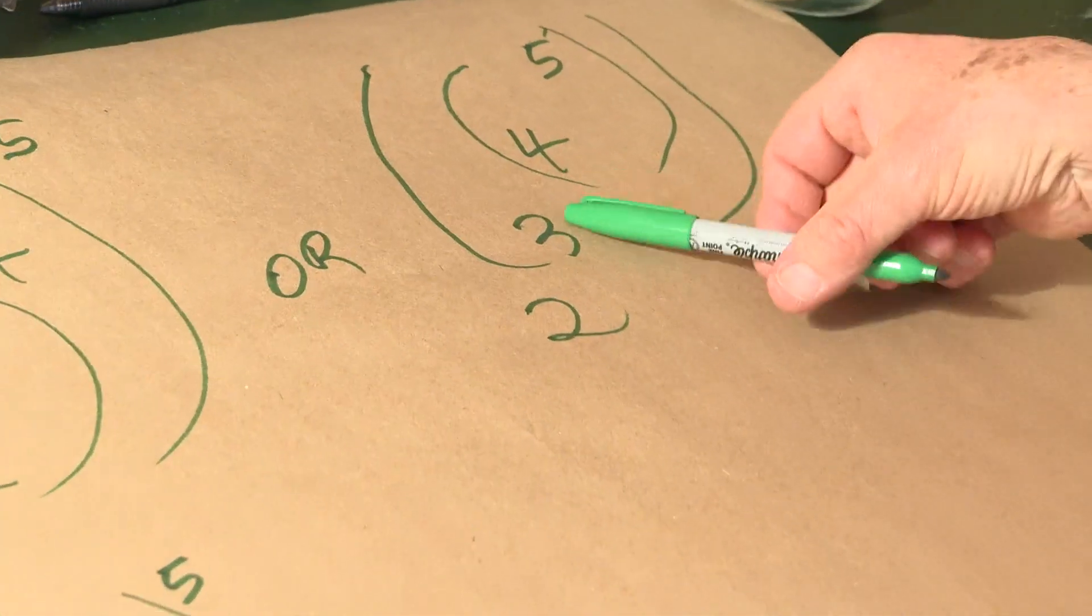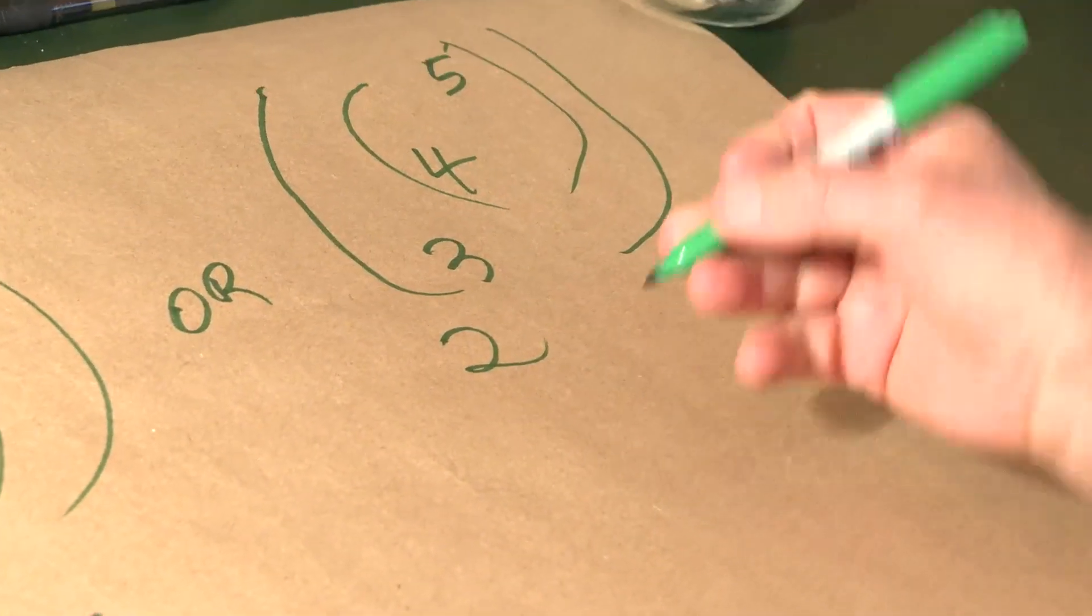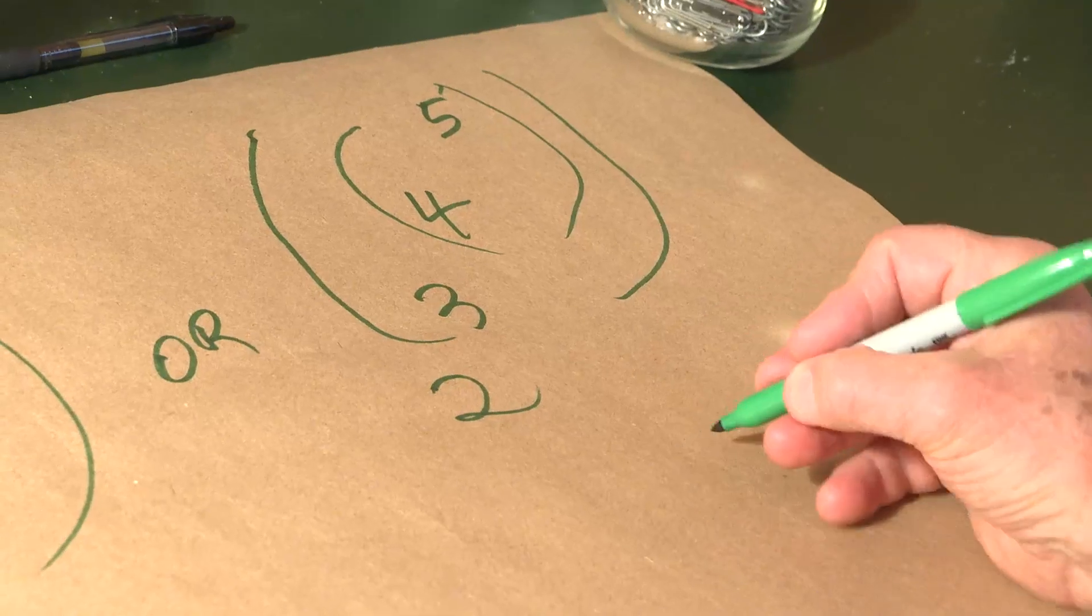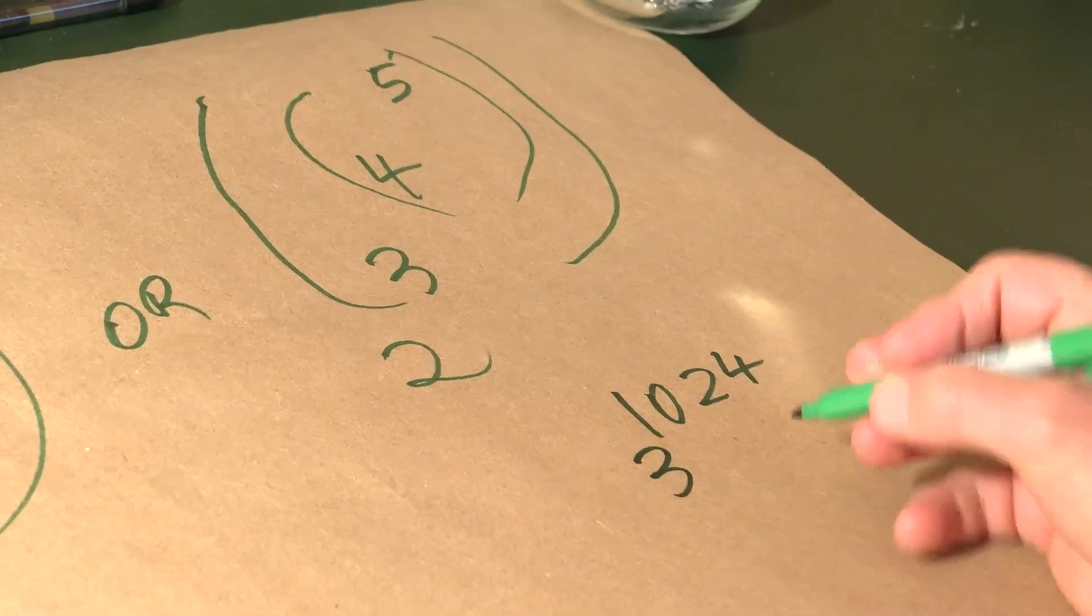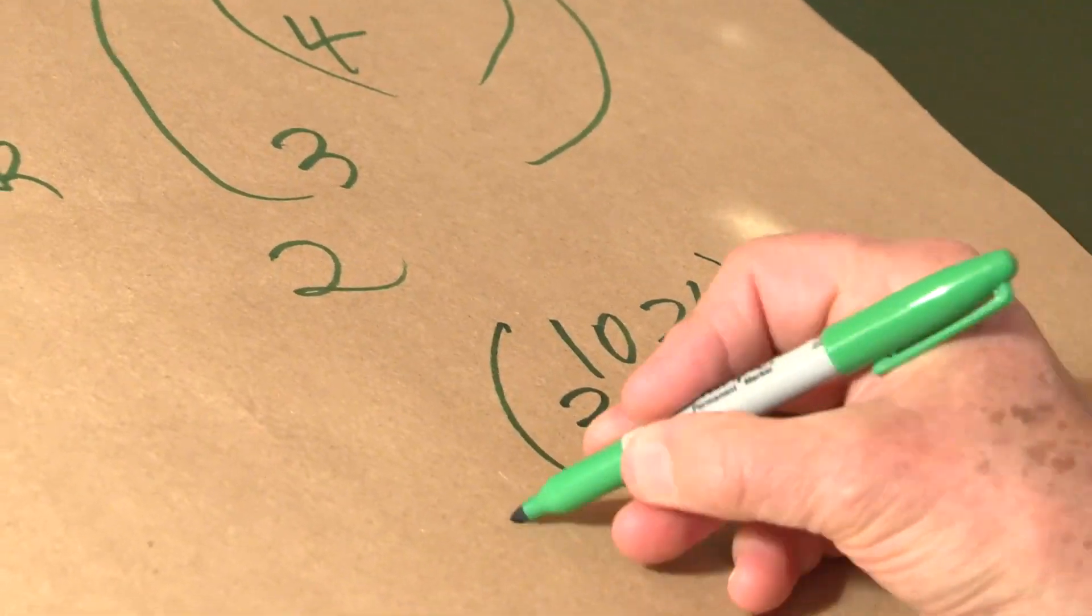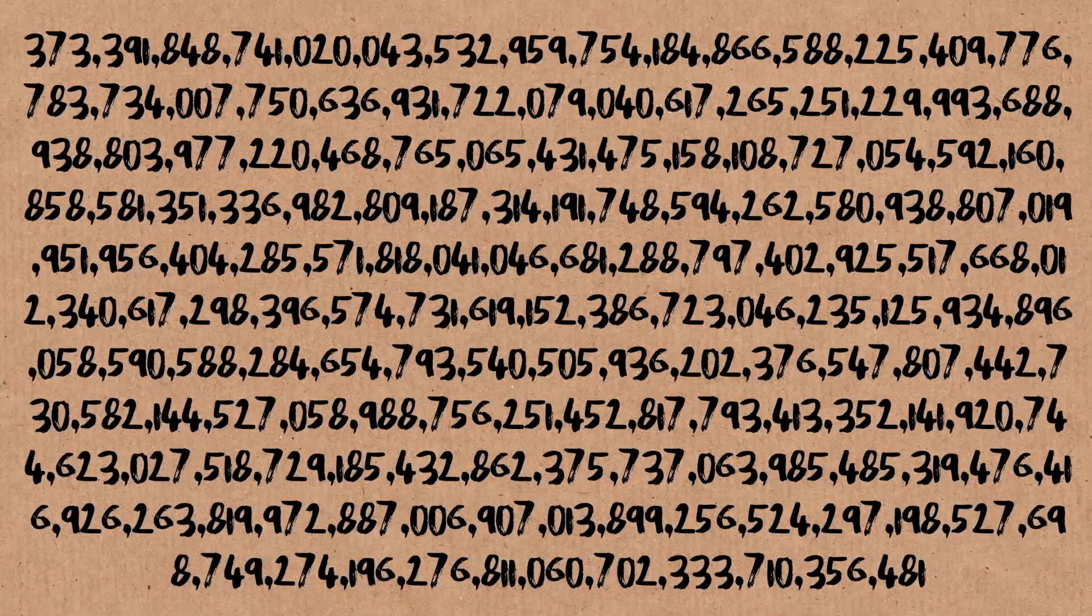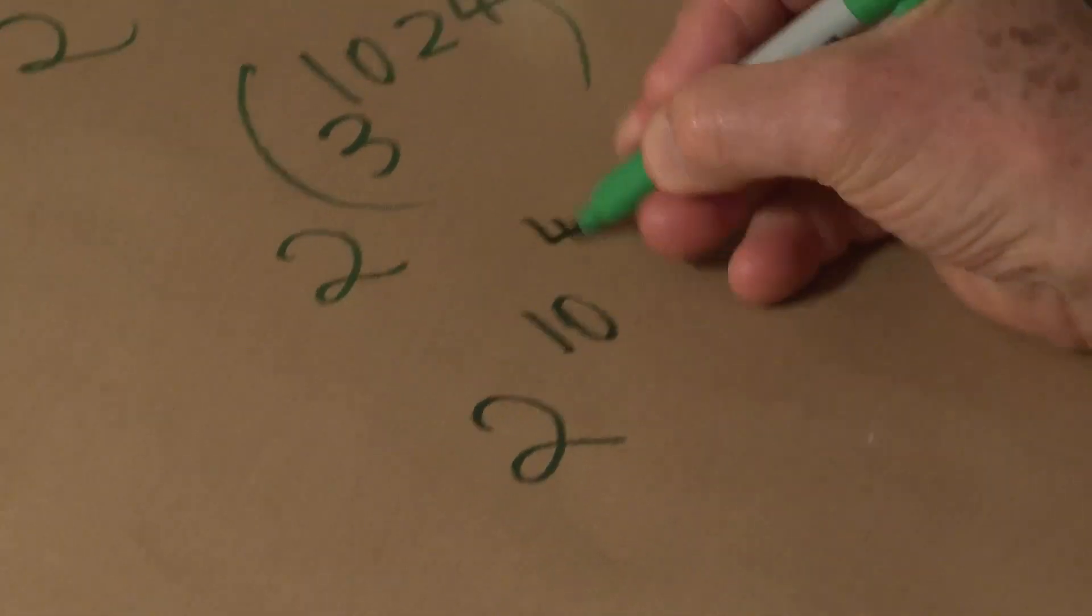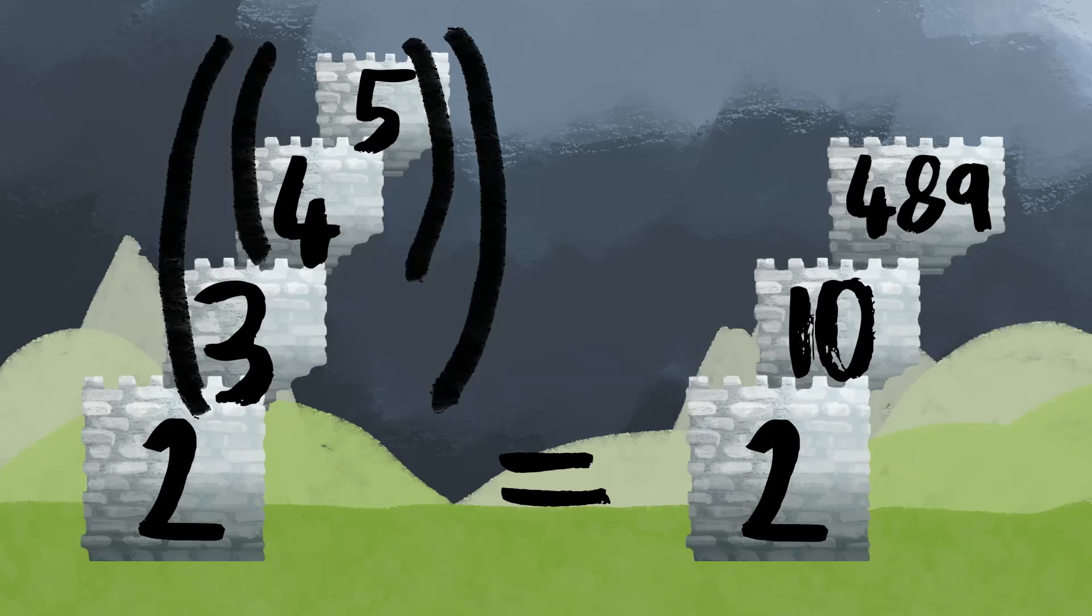Whereas, if we do it from the top down, this is the official way to do it, 4 to the 5 is 2 to the 10th, which is 1024, so we have 3 to the 1024, 2 to that power. Now, 3 to the 1024 is pretty big, so this is 2 to the 10 to the 489, and that's a pretty big number. So parenthesizing from the top down, that's the default in most computer languages. This gives you some pretty big numbers.